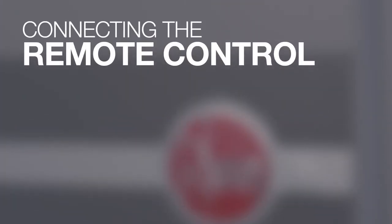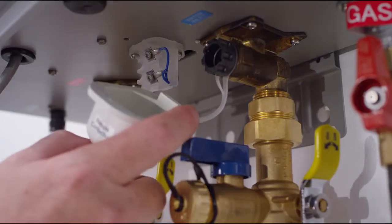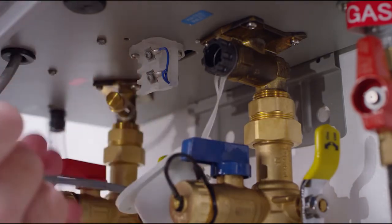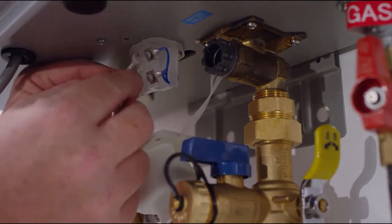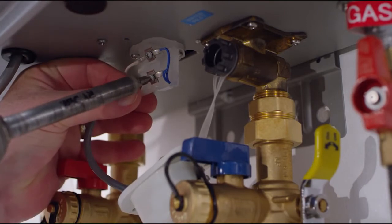Connect the remote control. To attach the remote control to the tankless water heater, the connection point is located at the bottom of the unit. Remove the screw that secures the connection point cover.